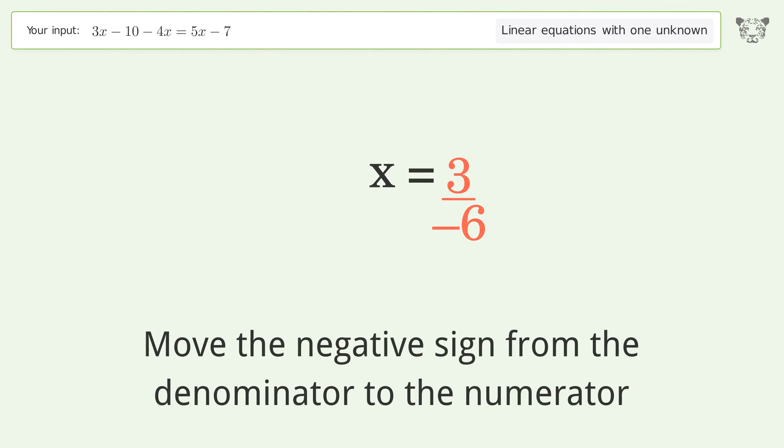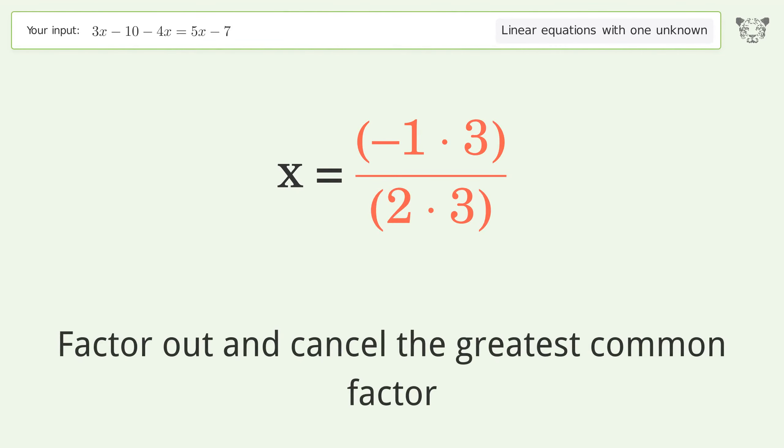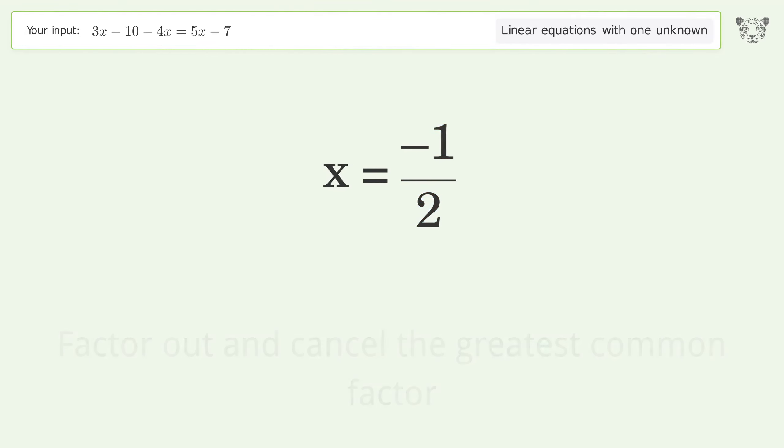Move the negative sign from the denominator to the numerator. Find the greatest common factor of the numerator and denominator. Factor out and cancel the greatest common factor. And so the final result is x equals negative one over two.